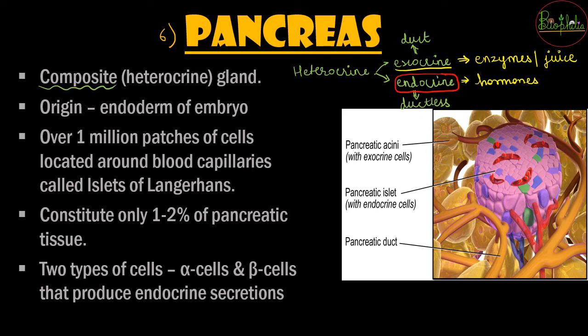The hormones of the pancreas will be discussed here. The pancreas is an organ with its origin from the endoderm of the embryo. Inside the pancreas there are over one million cells located around the blood capillaries, and these cells are the islets of Langerhans. These islets of Langerhans are part of the endocrine part of the pancreas, while the pancreatic acini are part of the exocrine system.